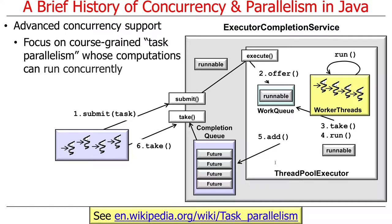The focus in Java 1.5 was on coarse-grained task parallelism, where you can have computations run concurrently in pools of threads. Features include the executor service and executor completion service, where you submit tasks — runnables or callables. Threads in a pool pull runnables or callables off queues and run them, and when done, they place results into other queues. Programs can then get results by taking them from the queue. That's the basic idea of the executor framework and executor completion service in Java 1.5.